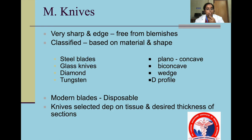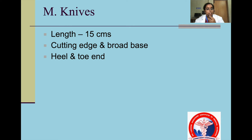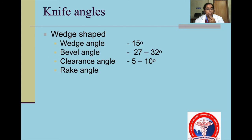The knife should be very sharp and the edge free from blemishes. Steel blades have planoconcave, biconcave, wedge and D profiles. Other blade types include glass, diamond and tungsten; modern blades used nowadays are disposable. Knife length is initially 15 cm with a cutting edge and broad base. The two ends of a knife are the heel and the toe. The wedge-shape knife has a wedge angle of 15 degrees, bevel angle ideally 27 to 32 degrees, and clearance angle usually 5 to 10 degrees. You should also know the rake angle.